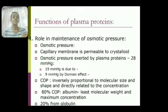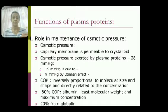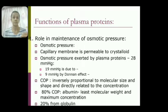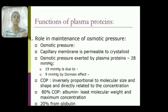Colloid osmotic pressure is inversely proportional to the size and shape of the molecule and directly proportional to concentration. Albumin has the highest concentration in plasma, and therefore 80% of colloid osmotic pressure is exerted by albumin. Its molecular weight is also the least. The remaining 20% of colloid osmotic pressure is exerted by globulin.